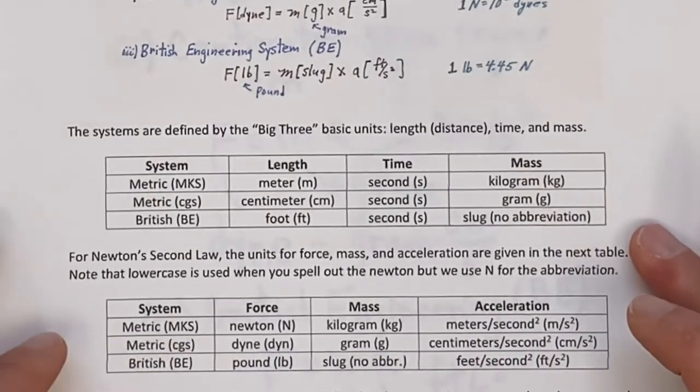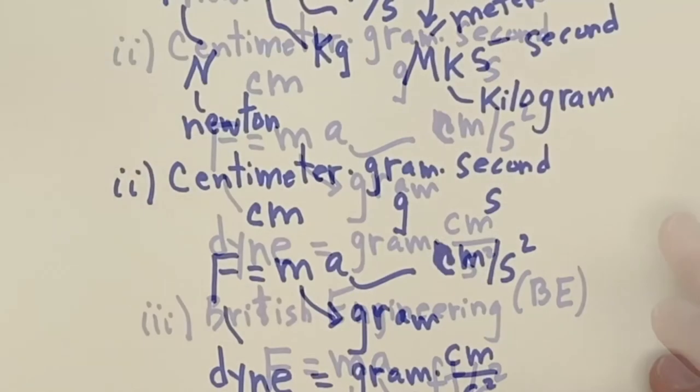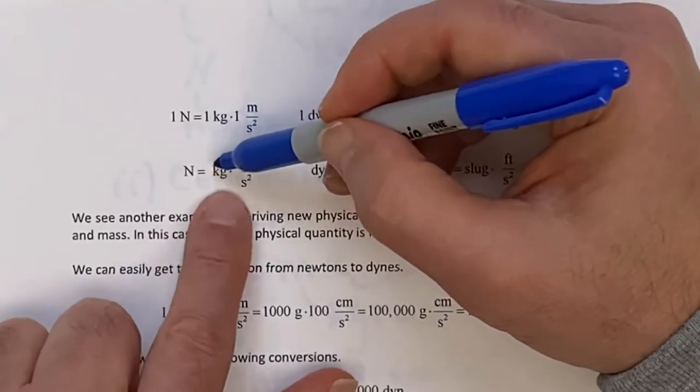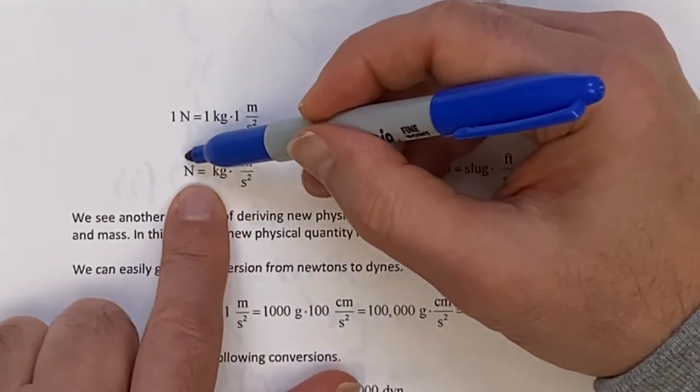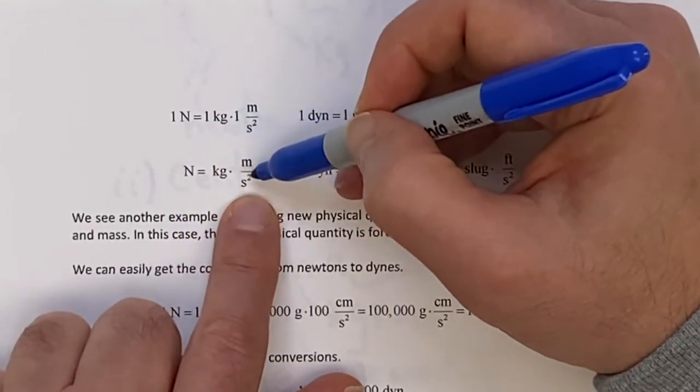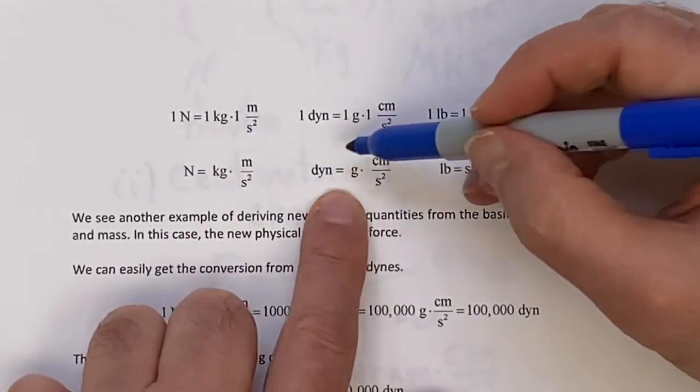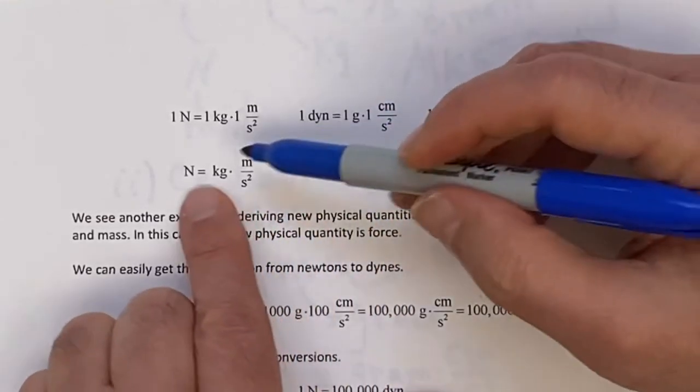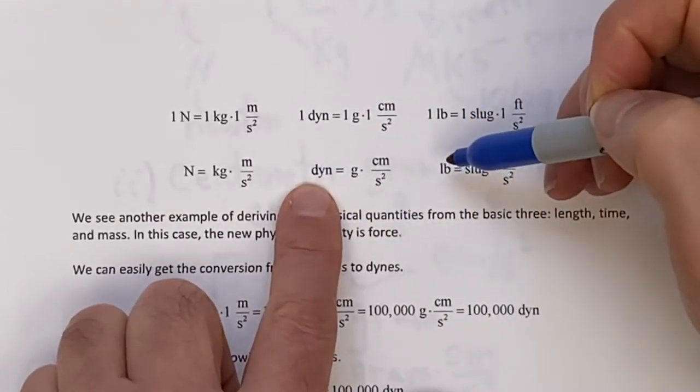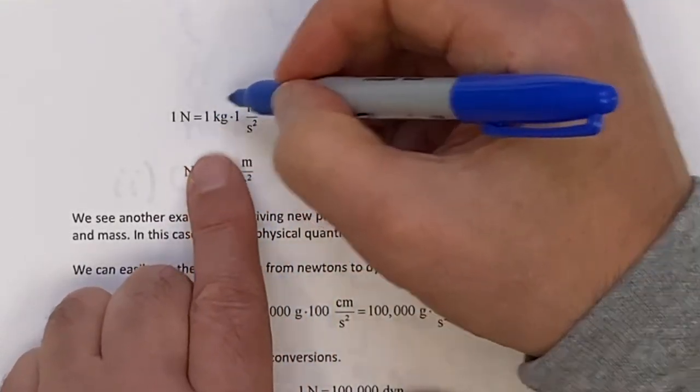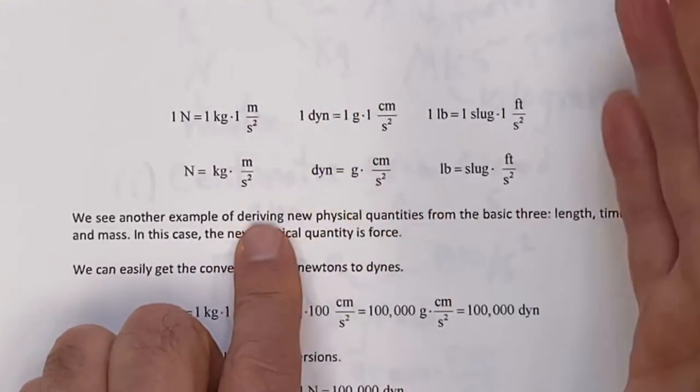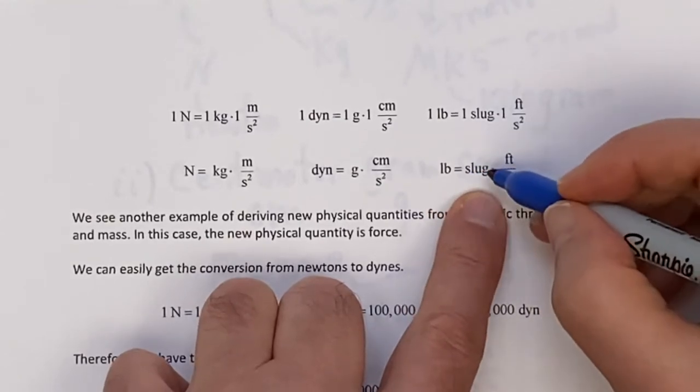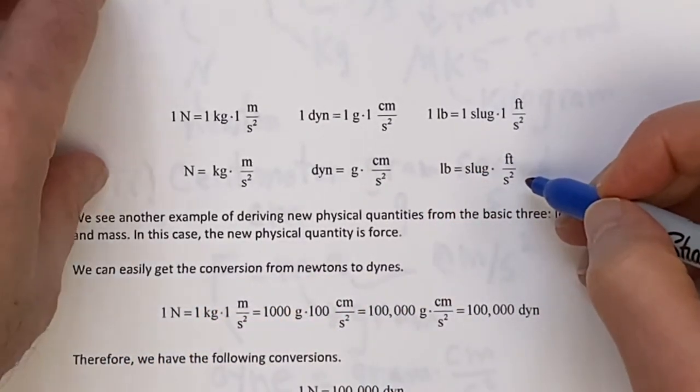A lot of tables, the MKS, CGS, and the British system. They have the length, the time, and the mass. And I have listed here what they are, and given abbreviations. No abbreviation for slug. Then when you use Newton's second law, you put the force in there, I have a little summary of what we're talking about. The next step though is the conversion, how to do conversions. But before we do that, here's a neat little summary.